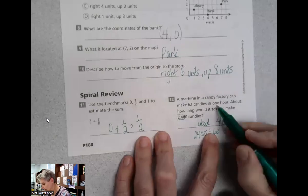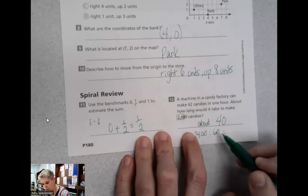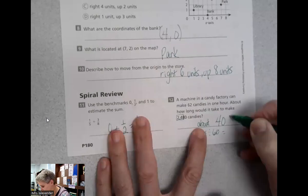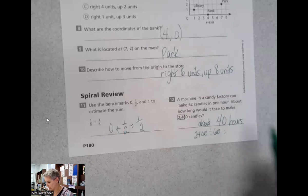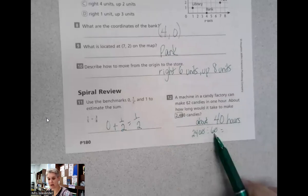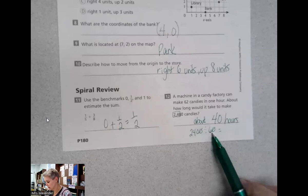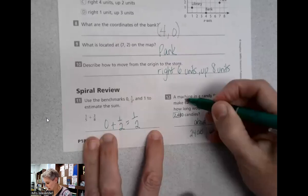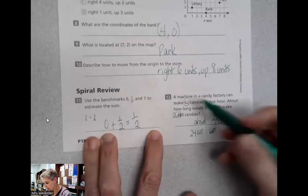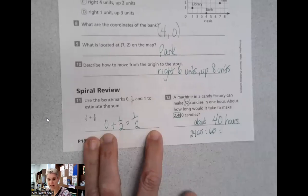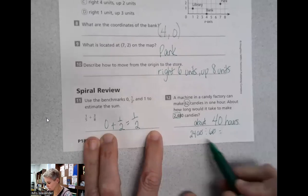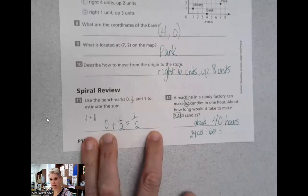I'm going to divide 2,400 by 60, because then we can cancel those zeros. Six goes into 24 exactly four times, and I add a zero. So the candy machine takes about 40 hours, not minutes. When we estimate our quotient, take your divisor and round it. Then look at the front of your dividend and see what's close. And you get about how much.